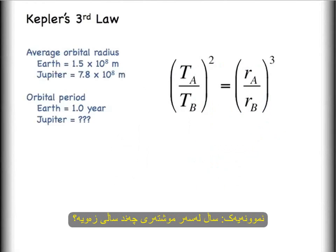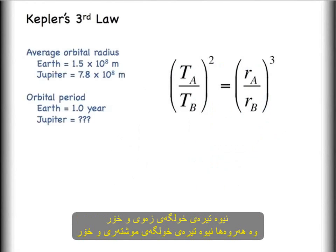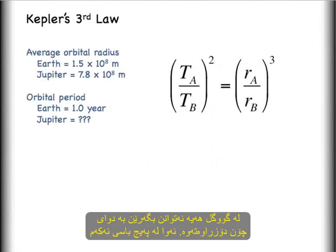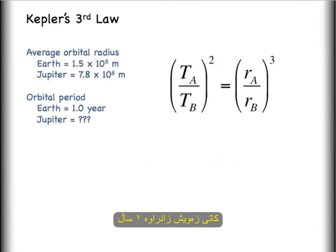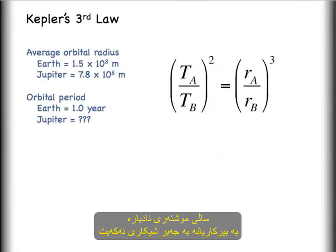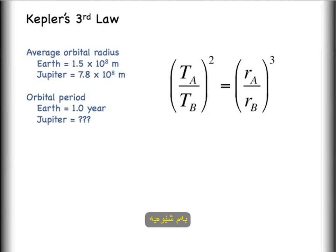Let's turn to an example in our solar system. I've looked up the values for the average orbital radius for the Earth — approximately 1.5 times 10 to the 8 meters. I have also selected Jupiter, at 7.8 times 10 to the 8 meters. The orbital period of Earth, we know by definition, is one year — that's what we call it when we go around one time in our slightly elliptical orbit.